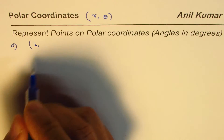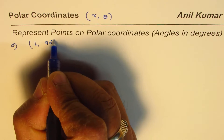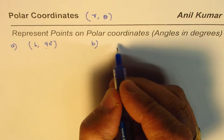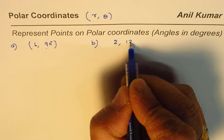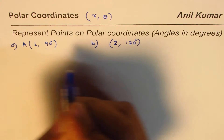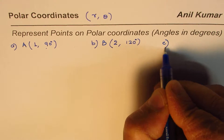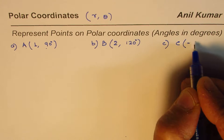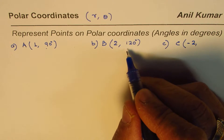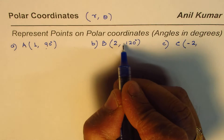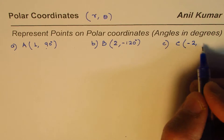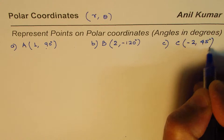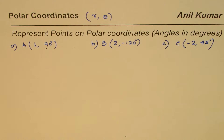Let's try to represent a few points. Simple ones: let's say point A is r=1 and theta=90 degrees. Then we'll see how to represent when we have more than 90 degrees — let's say point B has distance 2 and angle -120 degrees. Point C will be interesting: I'll make r negative, which we'll discuss, and keep the angle positive at 45 degrees. So we'll do these three examples in the video.